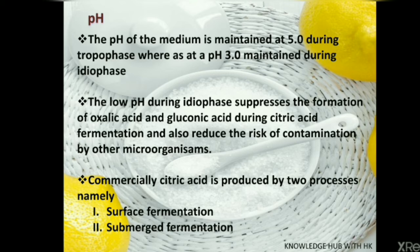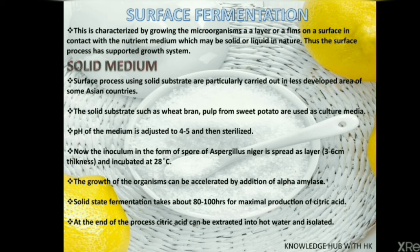Commercially, citric acid can be produced by two processes: surface fermentation and submerged fermentation. Surface fermentation is again divided into solid medium and liquid medium. It is characterized by growing the microorganisms in a layer or film on a surface in contact with the nutrient medium, which may be solid or liquid in nature. Thus, the surface process has a supported growth system.